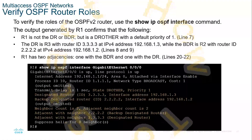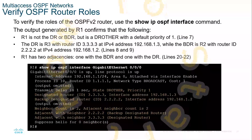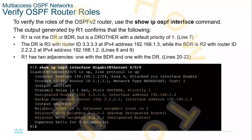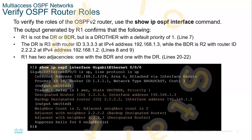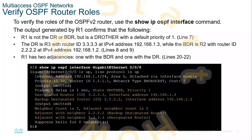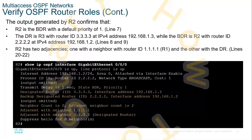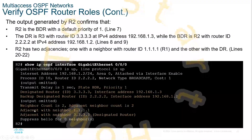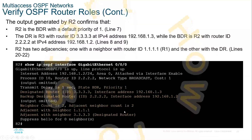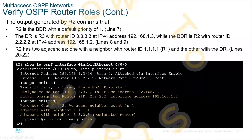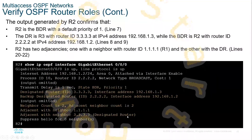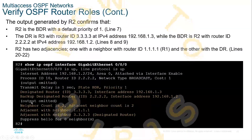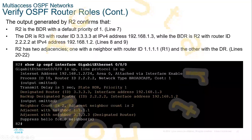You can see the designated router and the backup designated router IDs as well as your current router ID. R1 has two adjacencies — one with the BDR and one with the DR. You can see the neighbor count, adjacent neighbor count, and the adjacent neighbors. 22222 is one ID and 3333 is the other, listed as backup DR and DR. Looking at the output for R2, it also has two neighbors: the adjacency with neighbor 1111, which does not have a DR name because it would be a DR other, and the adjacency to 3333 which is the DR. You can also see its router ID, the designated router, and the backup designated router.